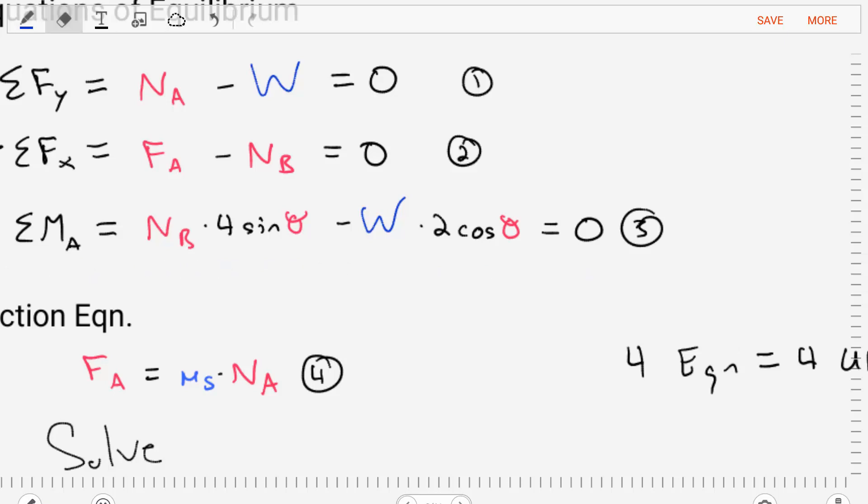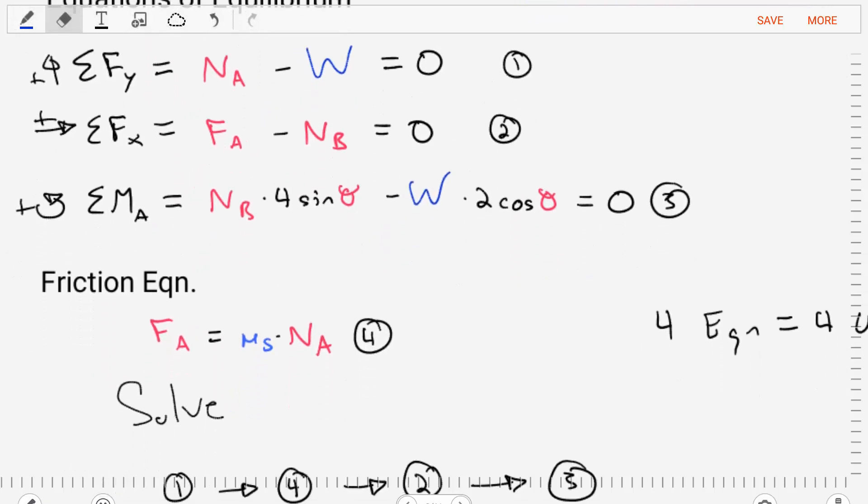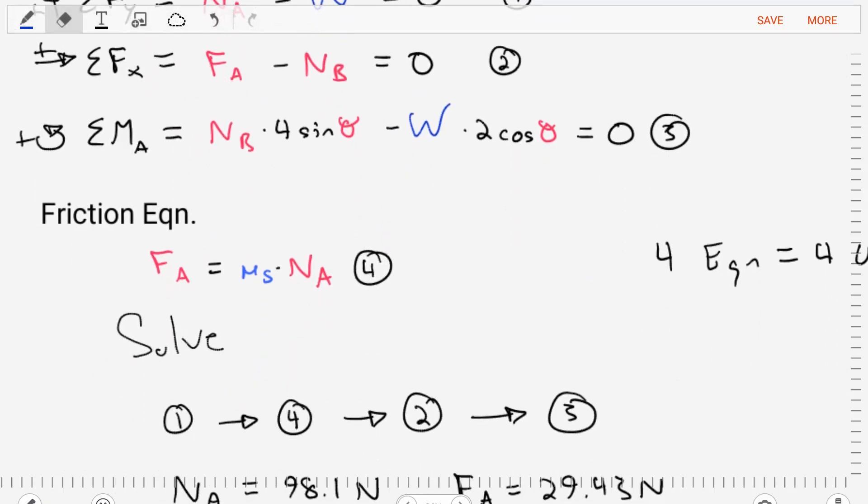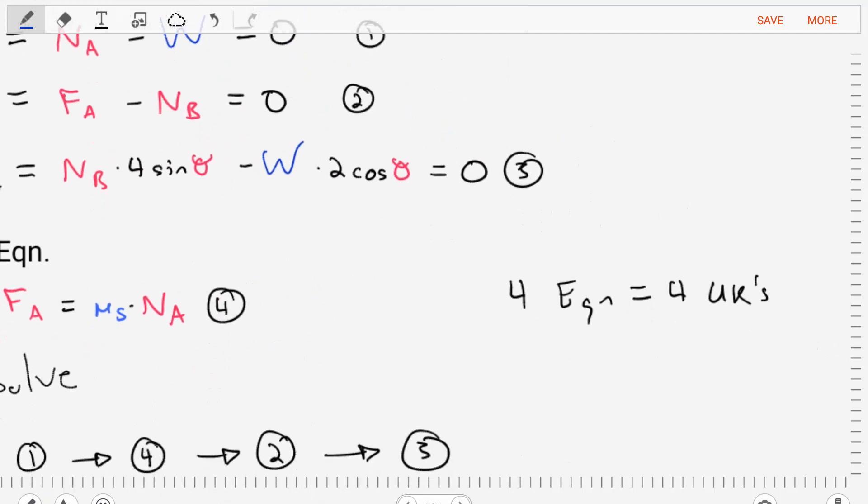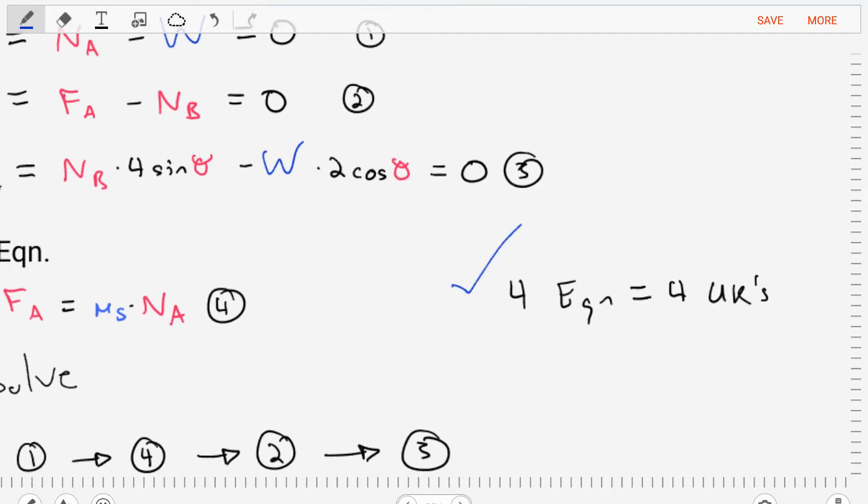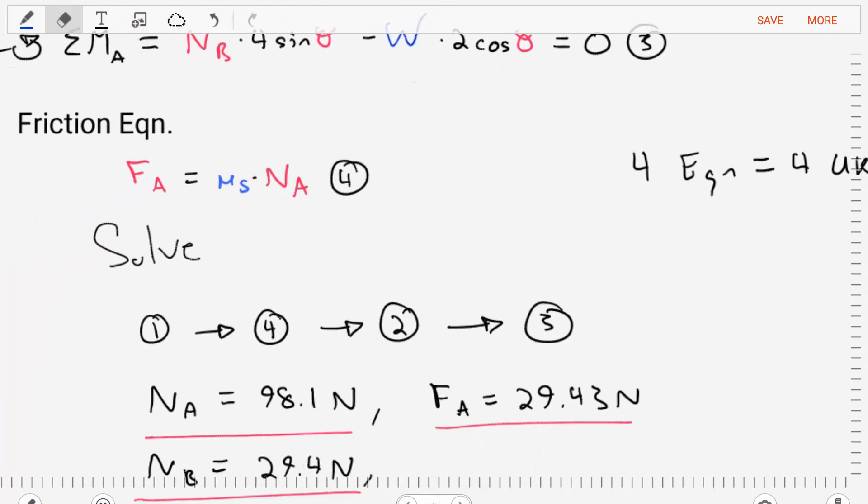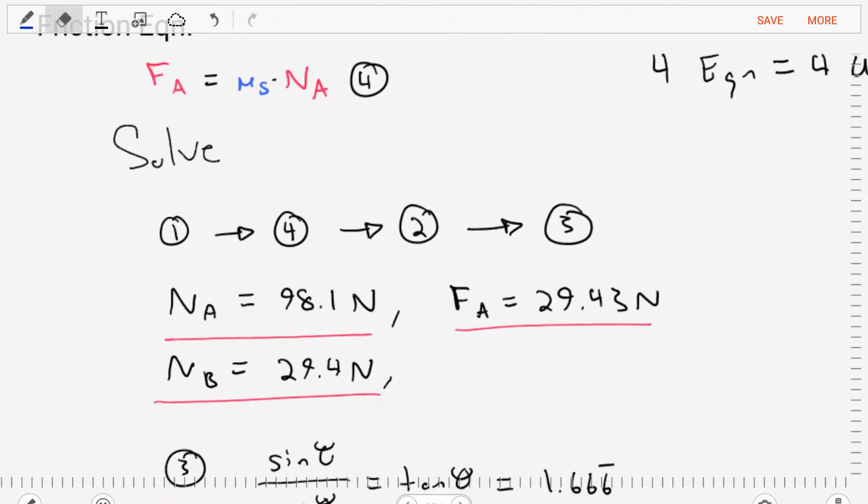All right. So now we have our three equilibrium equations. And then we can add our fourth equation for impending motion, saying that the friction at A is equal to static friction coefficient times a normal force at A. We've got four equations. We've got four unknowns. We can solve this system of equations. So let's do that. And we'll solve this in the following order. We'll take equation one. We'll plug it in to equation four. We'll plug that into equation two. We'll plug that into equation three. And as we move through those four equations.